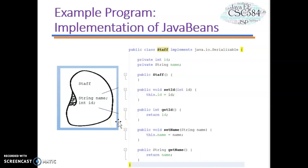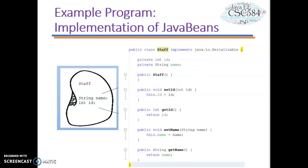Let's check the program code to verify it follows all Java Bean conventions. First convention — a Java Bean should have a default constructor with no arguments: we have public Star() with no argument — check. Second — a Java Bean should provide getter and setter methods: setId, getId, setName, getName — check. Third — a Java Bean should implement java.io.Serializable: the Star class implements java.io.Serializable — check. The class complies with Java Bean conventions.